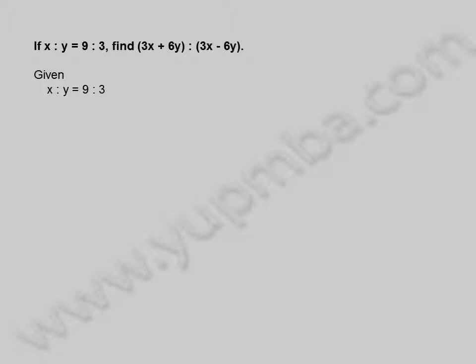Given x is to y is equal to 9 is to 3. This implies x by y is equal to 9 by 3, which is equal to 3. Therefore, x is equal to 3y.